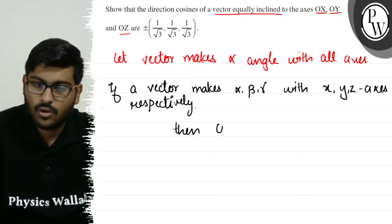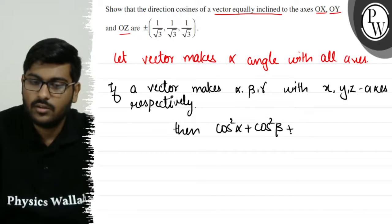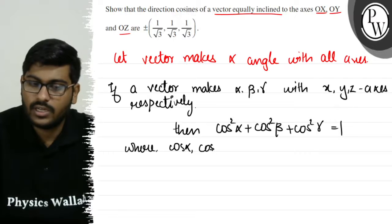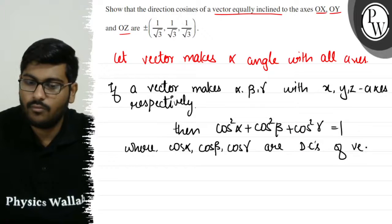Then cos²α + cos²β + cos²γ = 1, where cos α, cos β, cos γ are direction cosines of the vector.